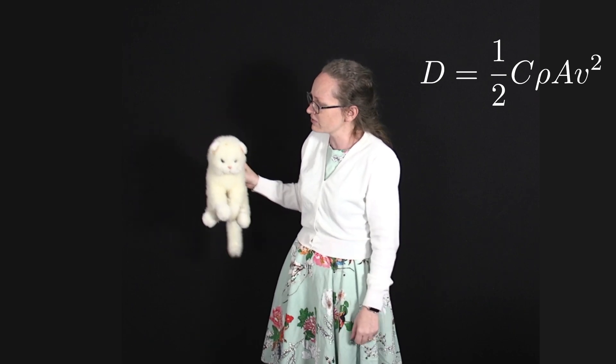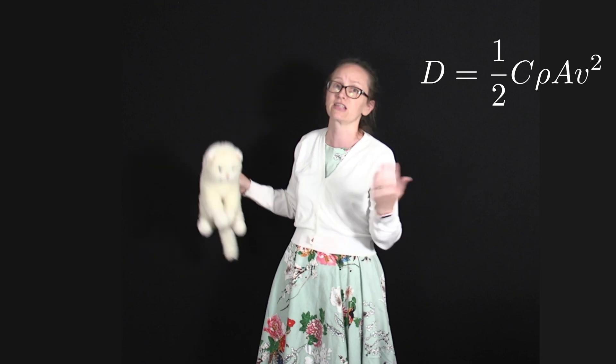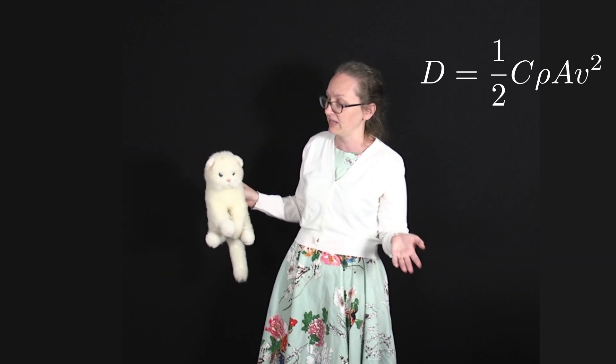If a cat falls from lower than the seventh floor, then it never reaches its terminal speed, and when it hits the ground it's not going as fast, and so once again it's more likely to survive.